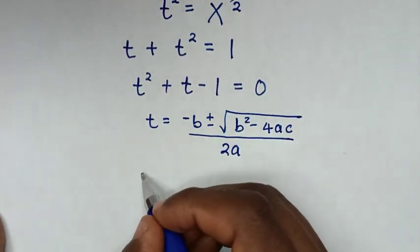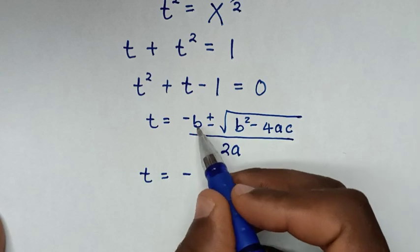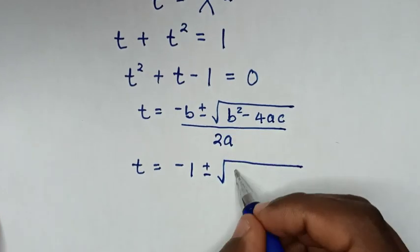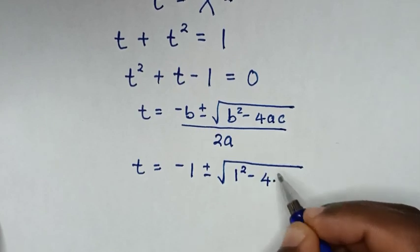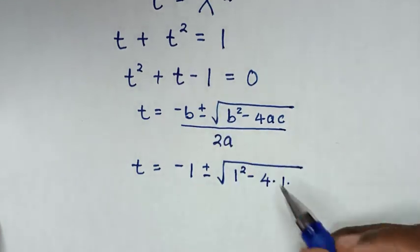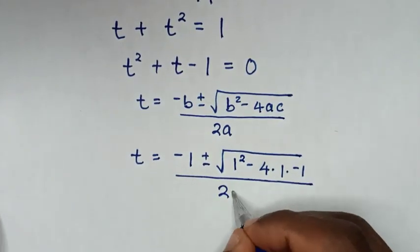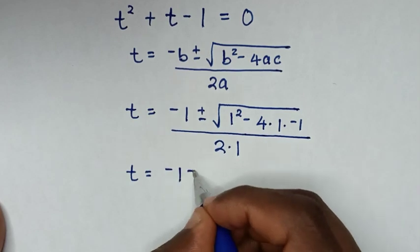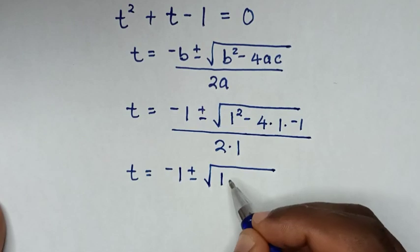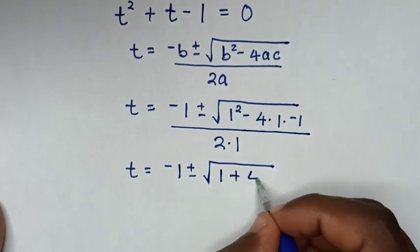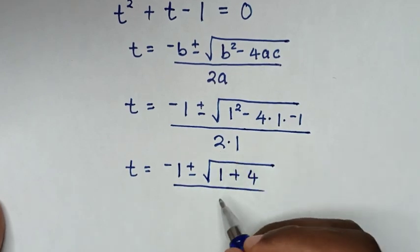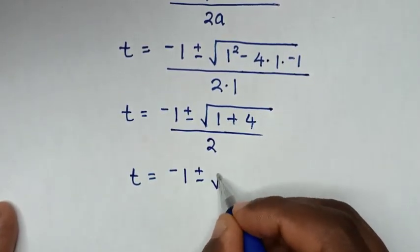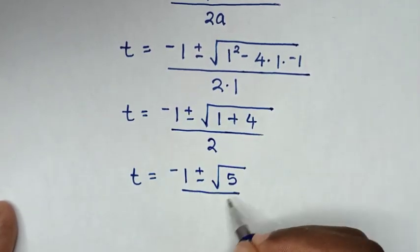Substituting values: t equals negative b, where b is the coefficient of t which is 1, plus or minus square root of b squared — that is 1 squared — minus 4 times a (which is 1) times c (which is negative 1), all over 2. This simplifies to negative 1 plus or minus square root of 1 plus 4, over 2, giving us negative 1 plus or minus square root of 5 over 2.